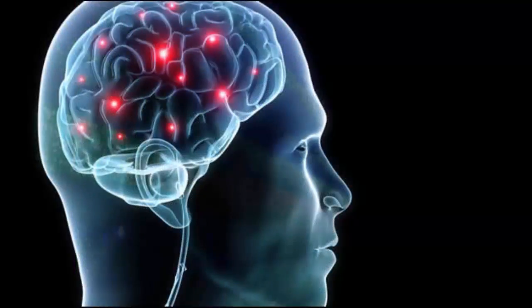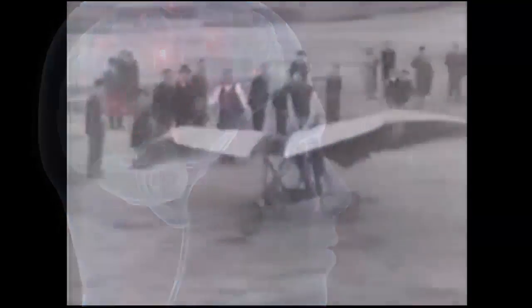These failures led scientists to believe that building a thinking machine required understanding how the brain works. They didn't initially worry about understanding the brain because they likened the problem to early flight. Early attempts to fly by mimicking how birds flapped their wings were a disaster. We eventually bypassed biology to build fixed wing aircraft.